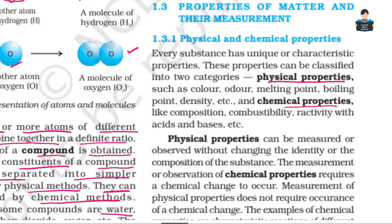In this topic, we will discuss physical and chemical properties. There are unique characteristics of all substances and we will classify all the properties into each of these categories. Physical properties include color, odor, melting point, and boiling point. Physical properties involve a reversible action, so they are reversible. Chemical properties are irreversible.